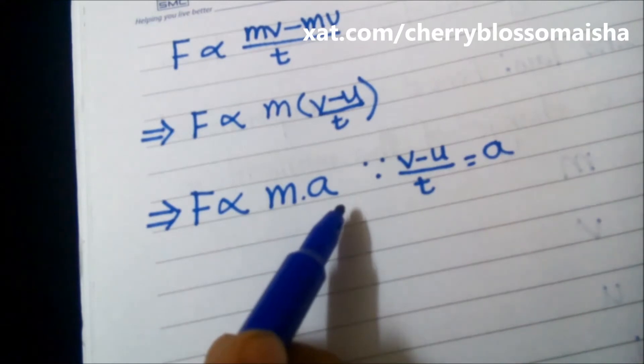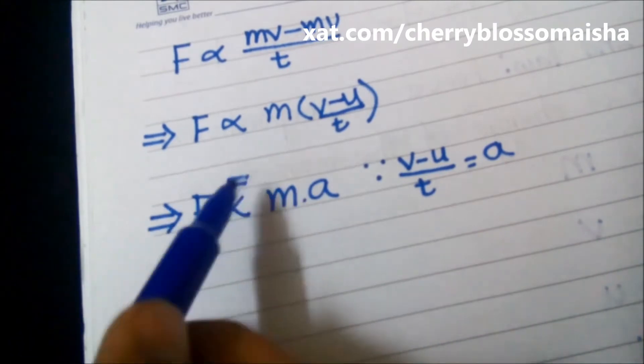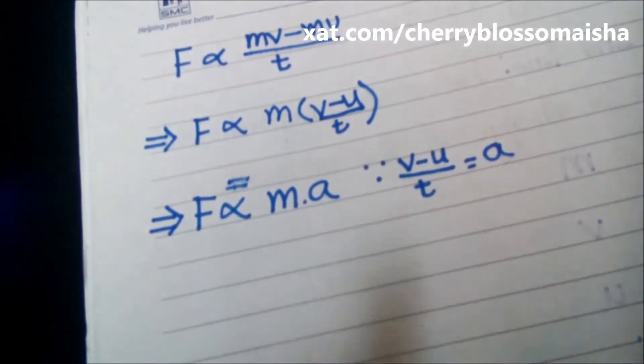But we have to prove F is equal to M a. To replace proportional sign to equal sign, we need to bring a constant.